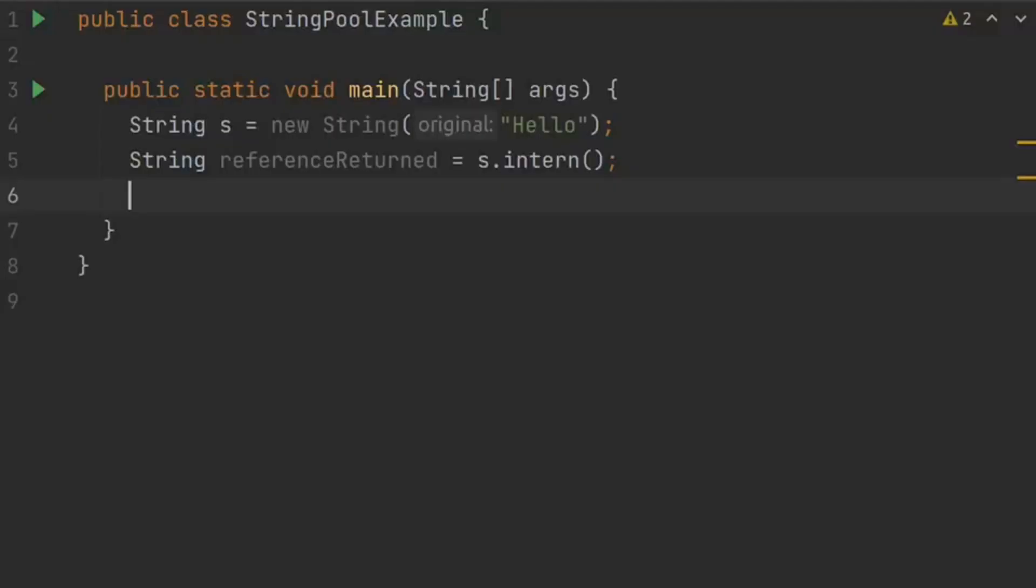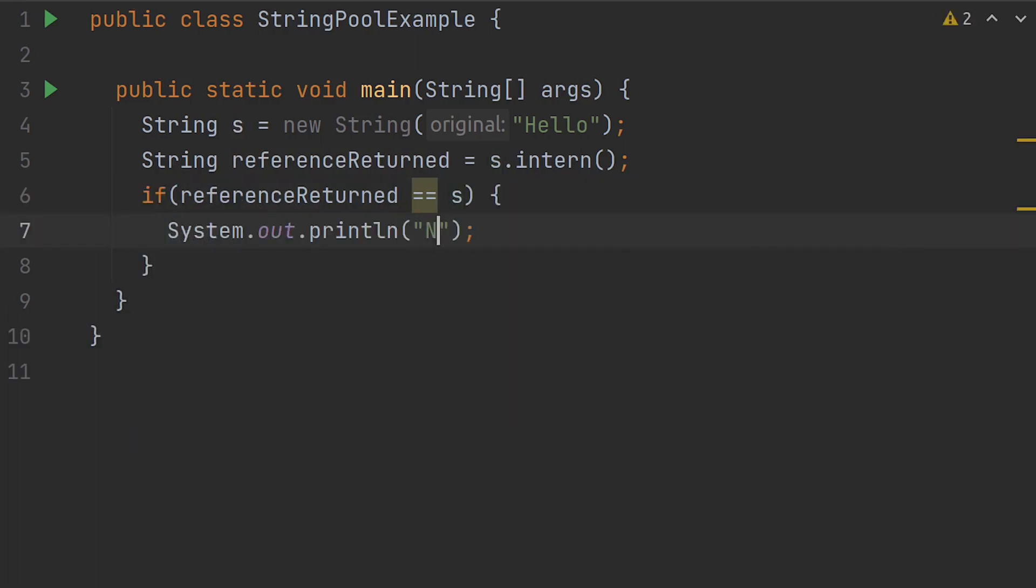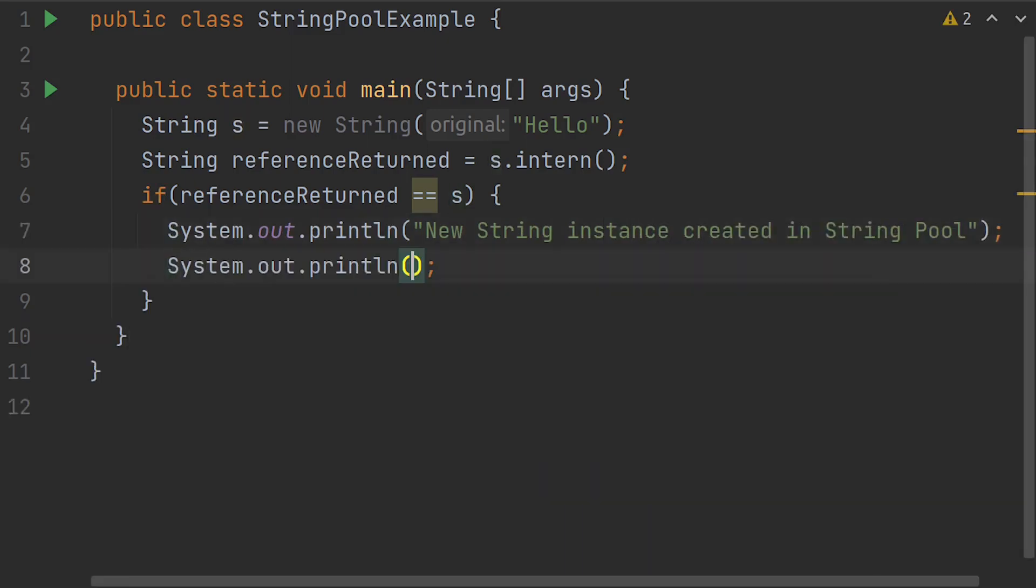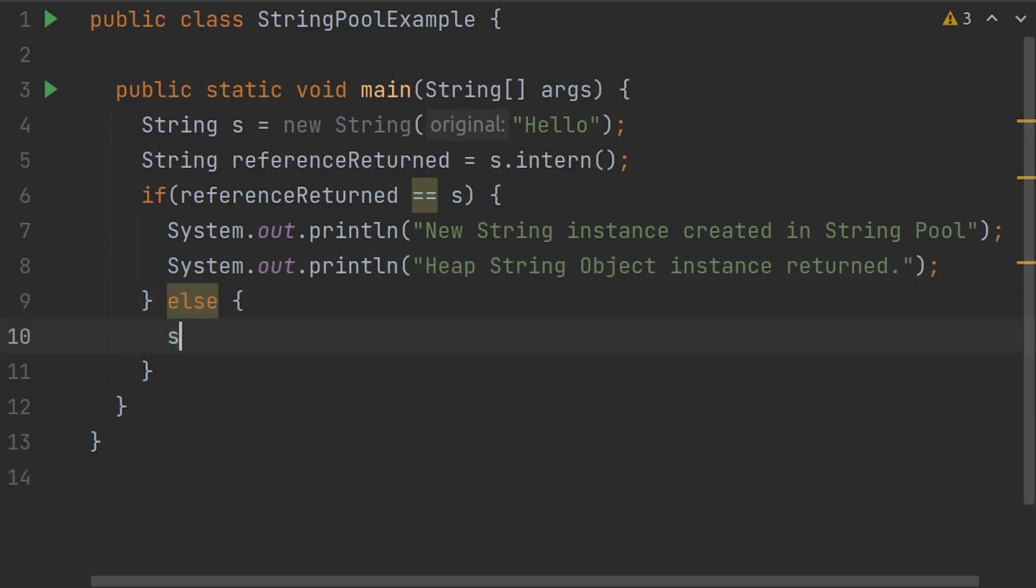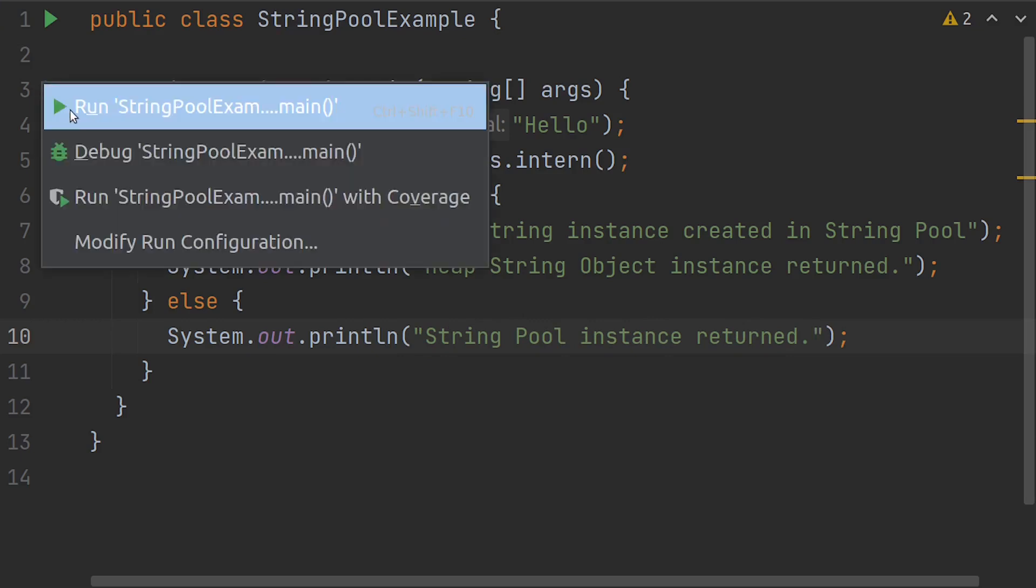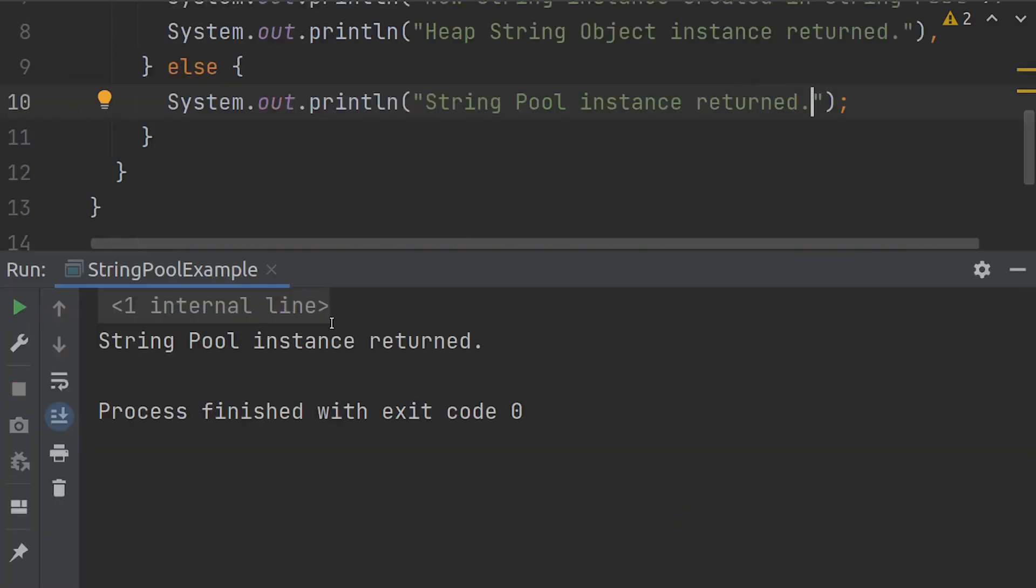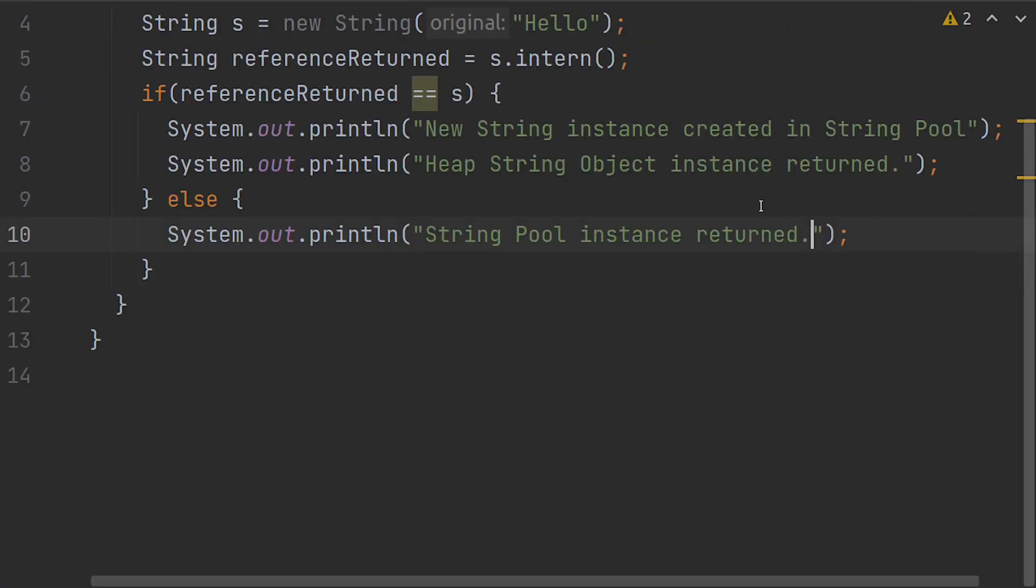To validate this, we can do if the condition reference returned equals equals string s, then system.out.println new string instance created in the string pool and object reference from heap space returned. Else do system.out.println string pool string instance returned. Let's run it. Cool, it printed string pool string instance returned, as the string literal hello already exists in the string pool.